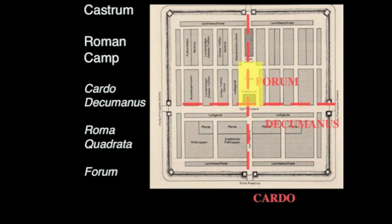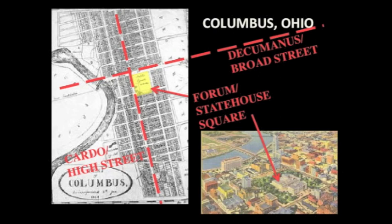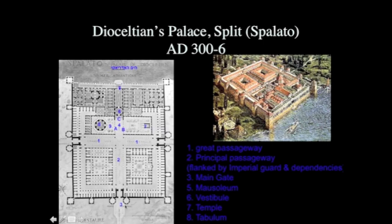We spoke last time about a town that is Roman in its layout — a magnificent town on the great prairies of the Midwest: Columbus. High Street is the cardo, Broad Street is the decumanus, and the State House is the forum. We also saw how buildings like the Palace of Diocletian in Split, on the coast of Croatia across the Adriatic, establish the imprint of Rome even on far-flung lands by rehearsing the general layout of pieces.